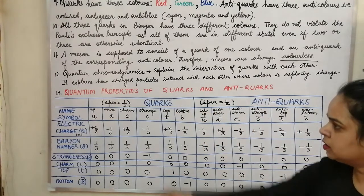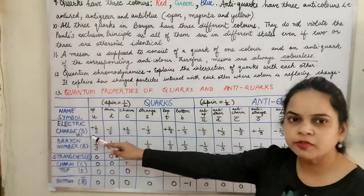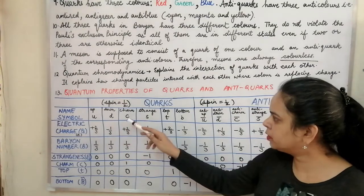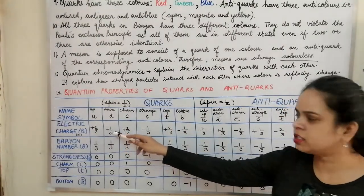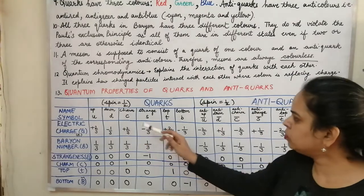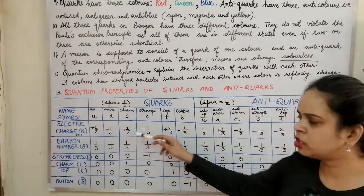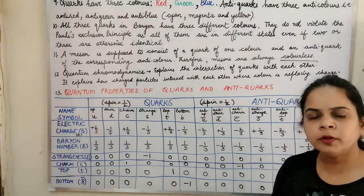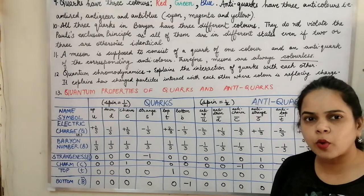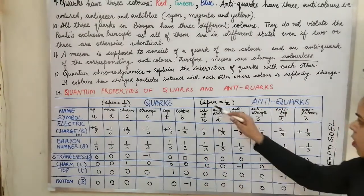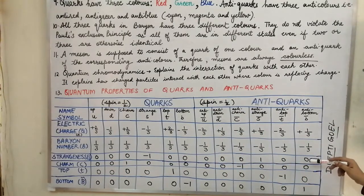For the electric charge: up, charm, and top have positive 2/3 of the electronic charge; their anti-particles have minus 2/3. Down, strange, and bottom have negative 1/3 of the electronic charge; anti-down, anti-strange, and anti-bottom possess positive 1/3. For the baryon number, since one baryon is formed by three quarks, each quark has a baryon number of 1/3 and each anti-quark has minus 1/3.